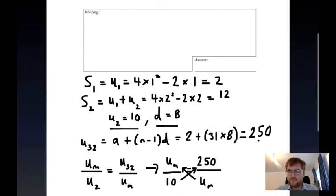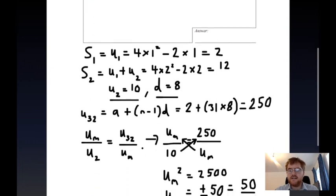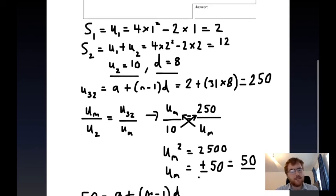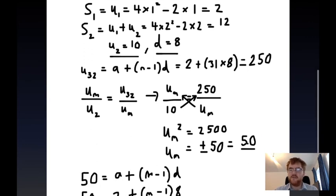Then we use the idea that in a geometric series or geometric sequence, the common ratio of the second term divided by first term is the same as the third term divided by the second term. We rearrange this to give us a very simple quadratic to solve, taking the positive answer because we can't have the minus 50th term of the sequence.